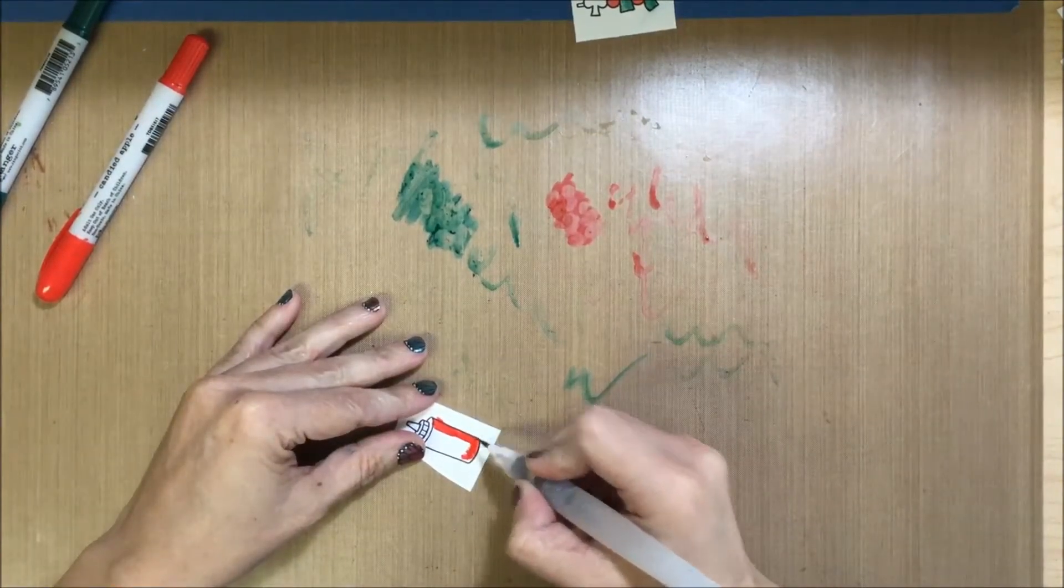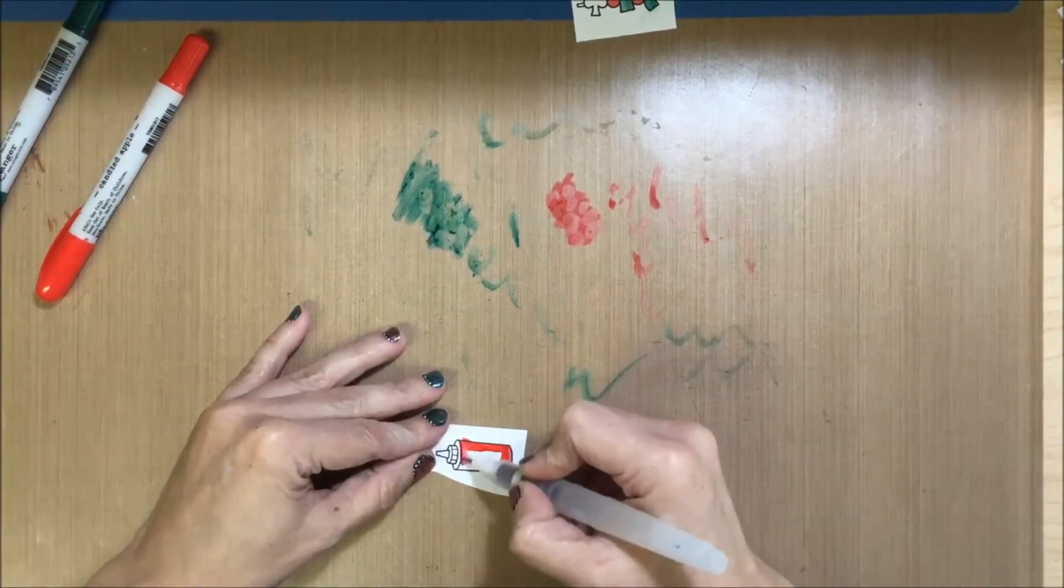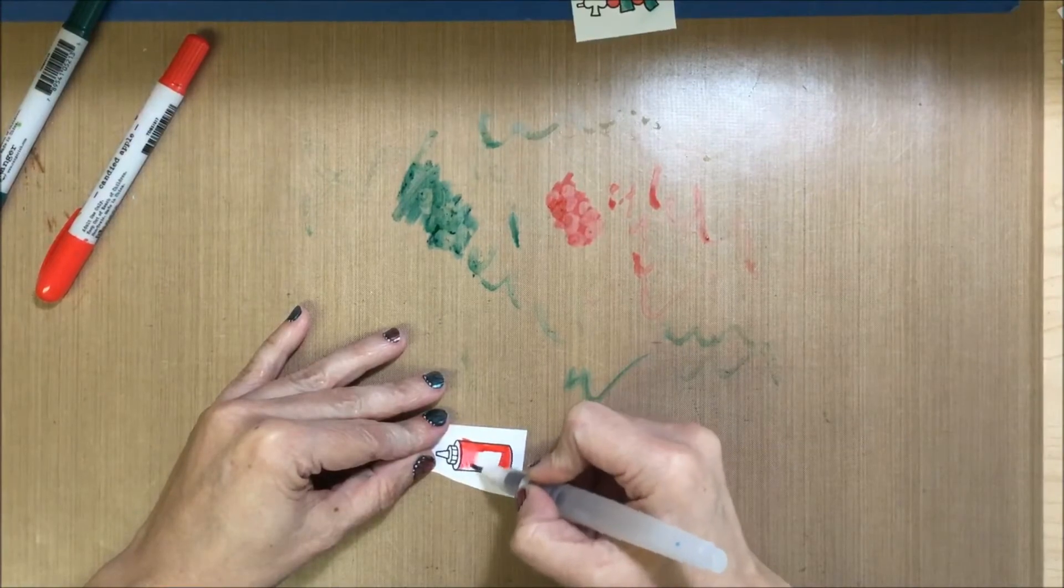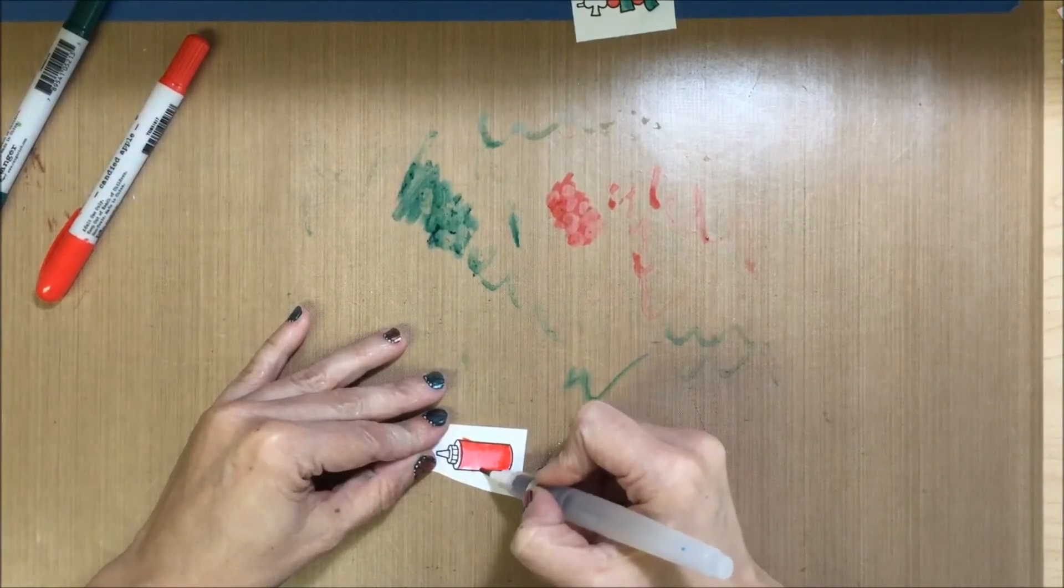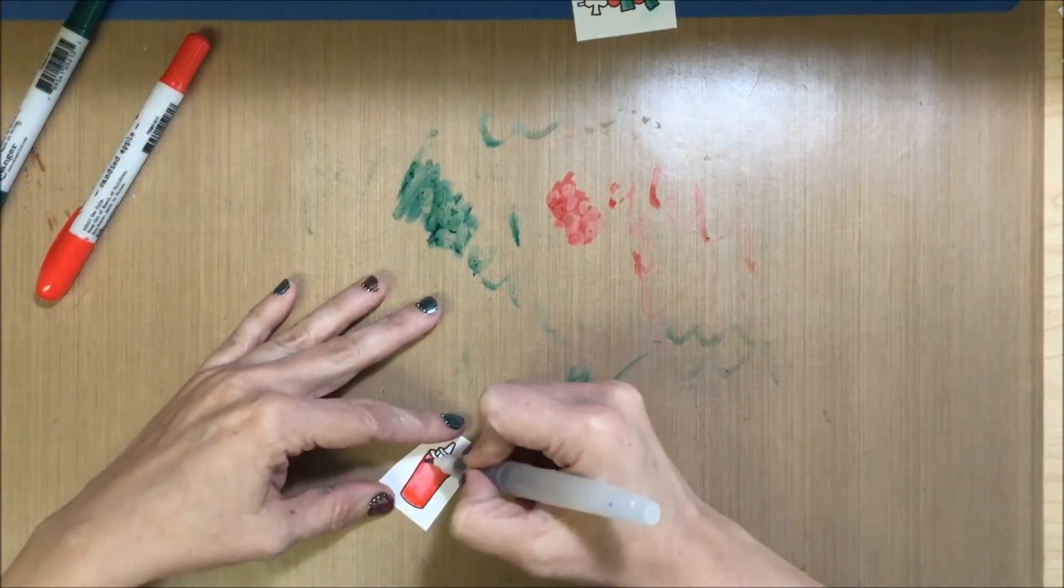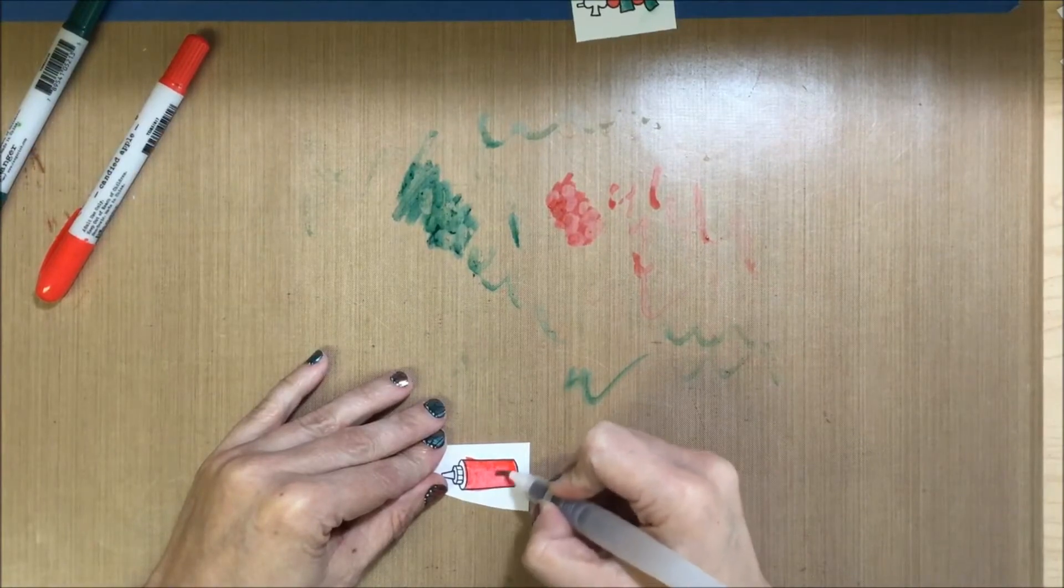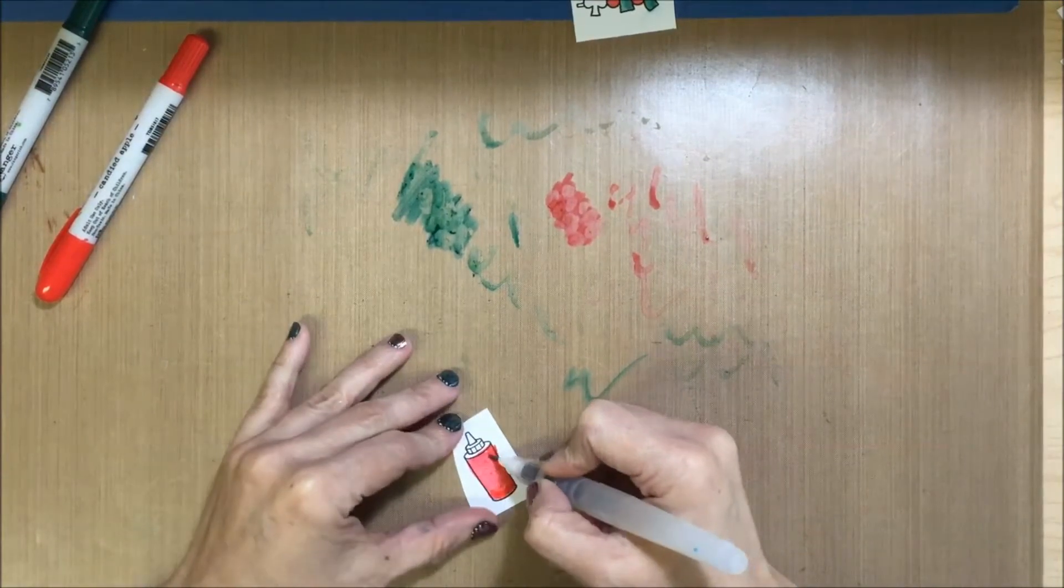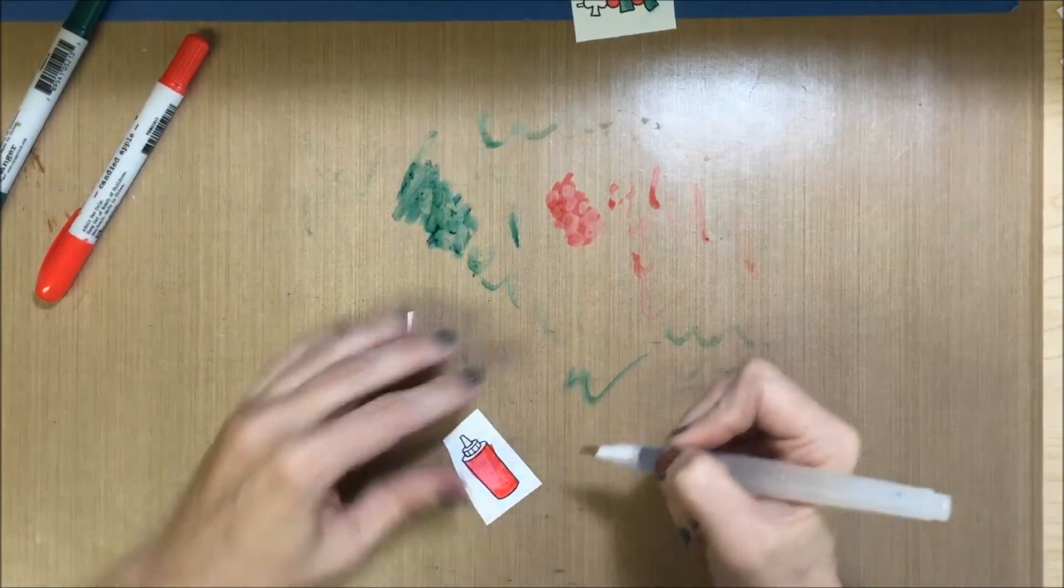So first thing you do is you wet the pigment with your water brush so that it moves nicely when you want it to. Now just bring that color over. Feather it over. And if you feel like that's too much color or you made a mistake, feather some back. Blend it so that it's all nice. There we go.